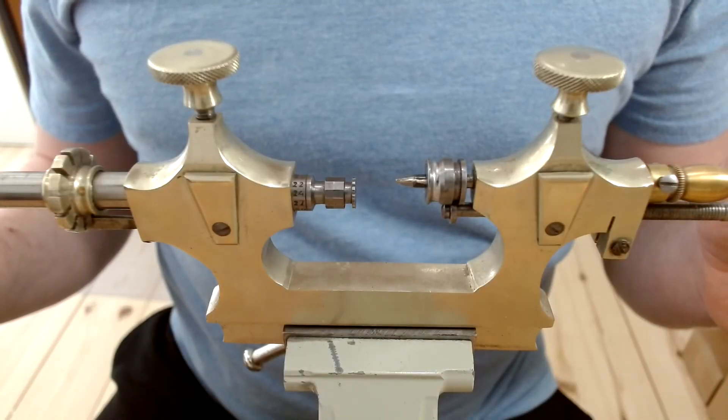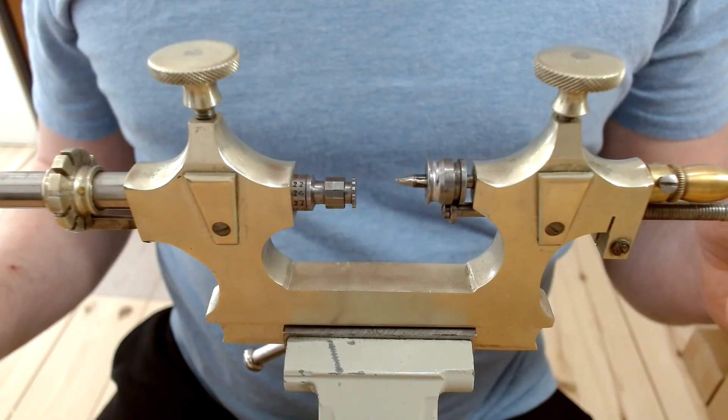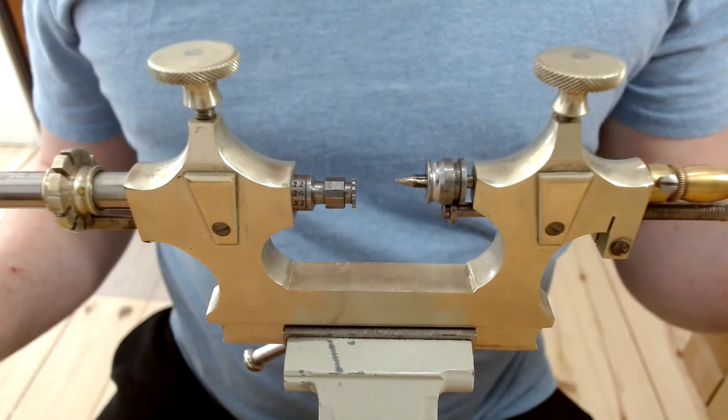Hi everyone, Ashton here and welcome to Precision Horology. Today we're going to be looking at pivot burnishing in the Jacko tool or the refinishing of train wheel pivots.